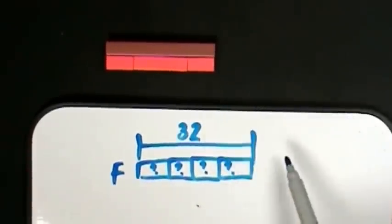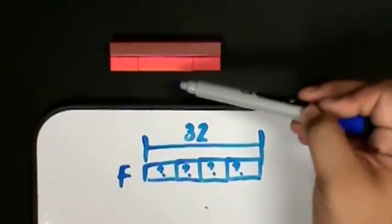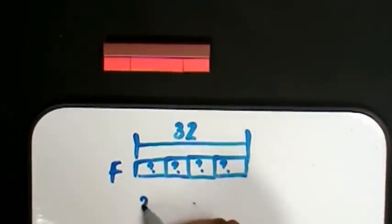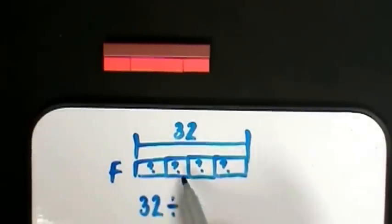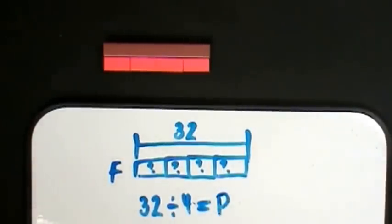My model and my picture tell me that I'm dividing because I separated my whole into four equal pieces. My equation would be 32 divided by four groups equals P for sheets of paper. I will write a number four in the box.